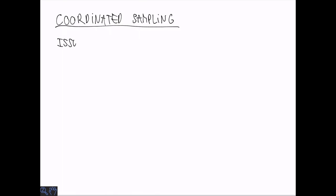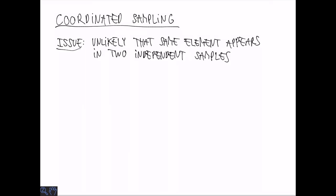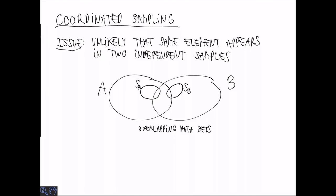Last time we looked at Random Independent Samples. These are good for many things, but not for everything. One issue is that it's unlikely when we do two independent samples that the same elements appear in both of them. Suppose for example that we sample from two overlapping sets A and B. From A we sample a set SA and from B we sample a set SB. Now, if the sampling probability is low enough, these independent random samples are unlikely to contain any elements from the intersection, or at least there will be very little information about A intersection B.